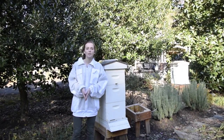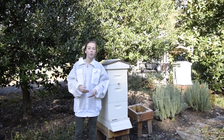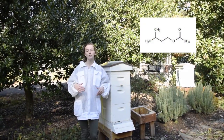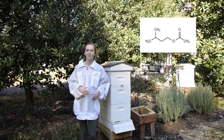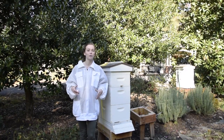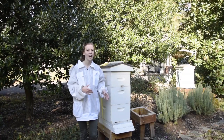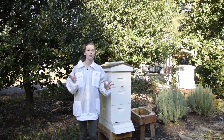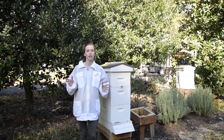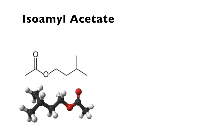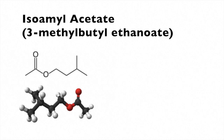The alarm pheromone is composed of several chemicals, mostly isoamyl acetate. Isoamyl acetate releases a smell that's like banana bread, and actually if you bring out a loaf of banana bread to a hive, you'll notice that the bees start to become more defensive and aggressive. Isoamyl acetate is a compound well known for its strong banana-like odor, and its IUPAC name is 3-methylbutyl ethanoate.